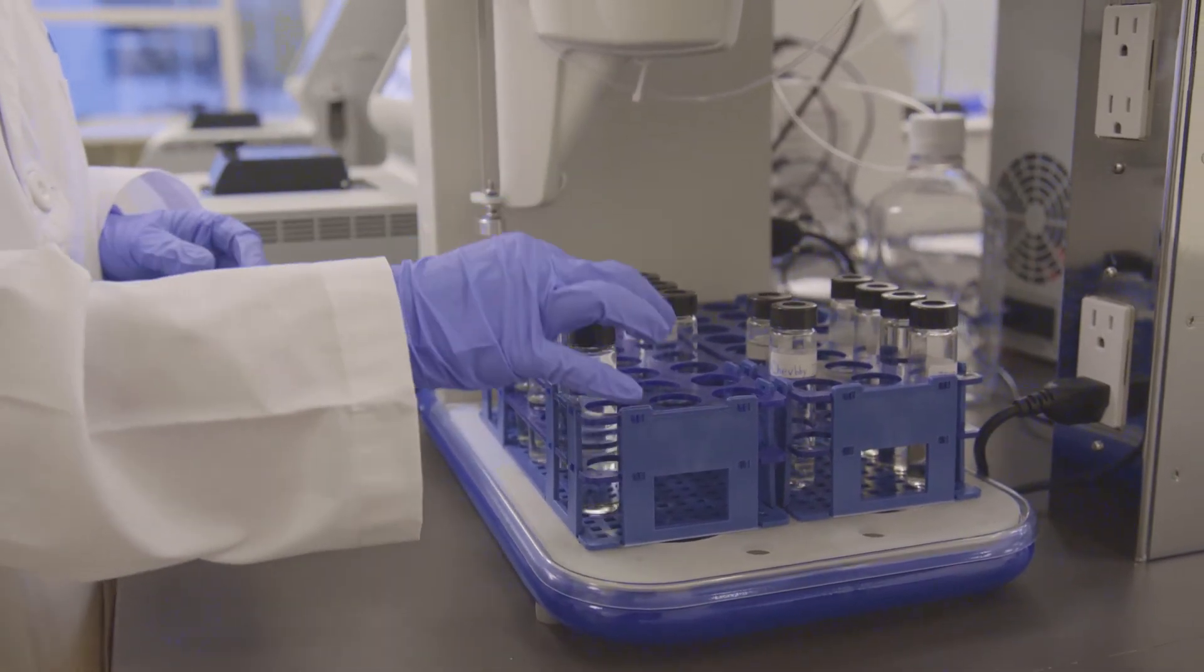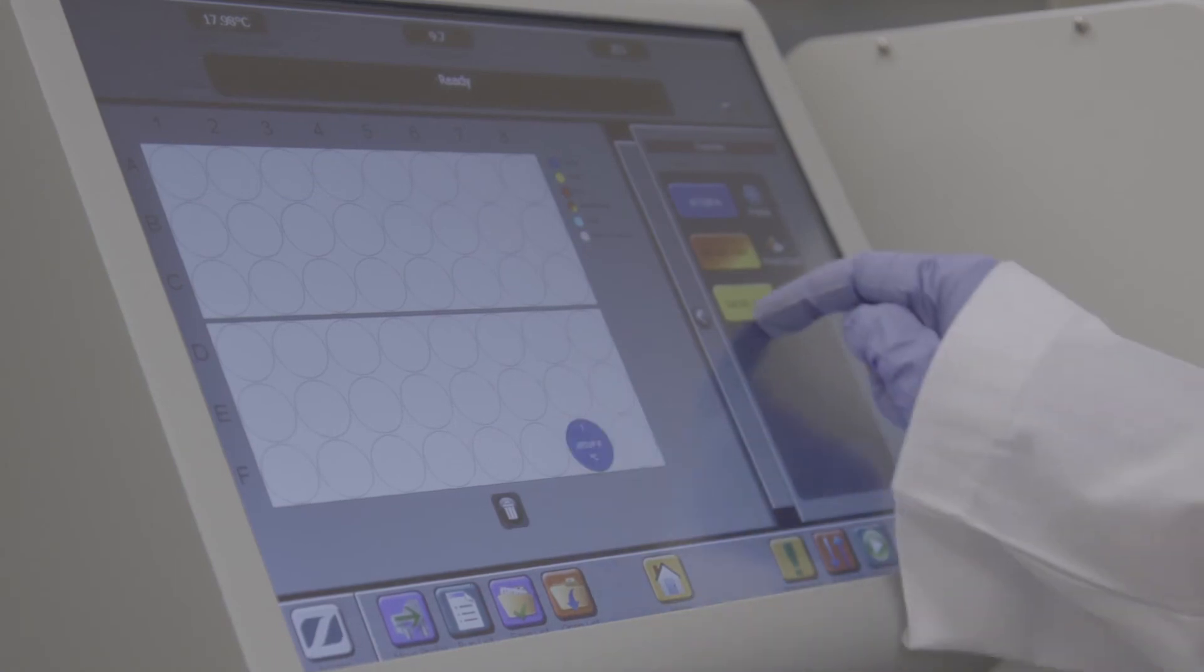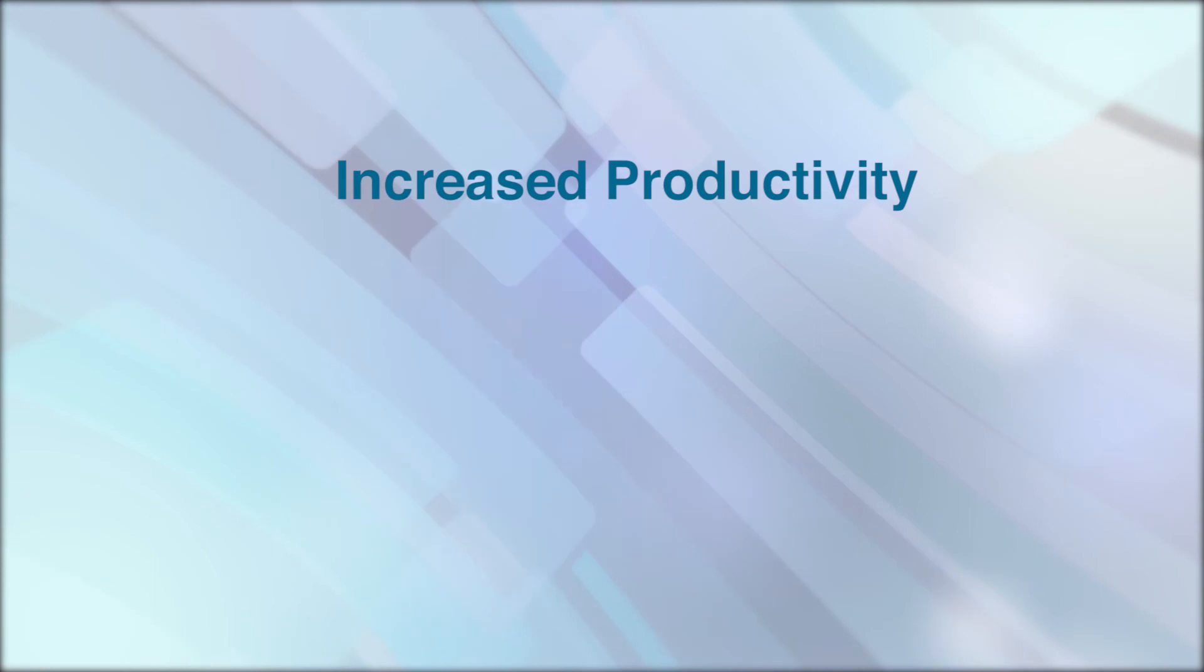Thanks to its time-saving and productivity-boosting features, the JFA 70XI can increase your lab's throughput further with a 48-place auto sampler.